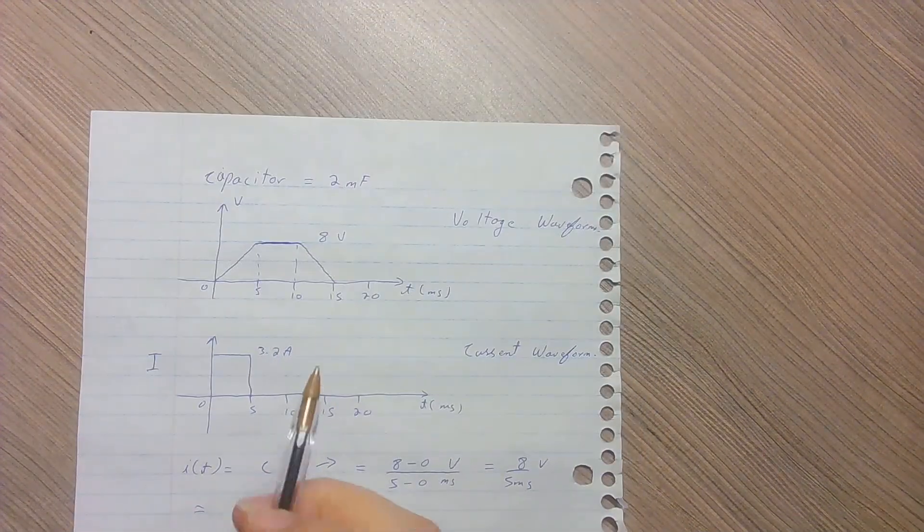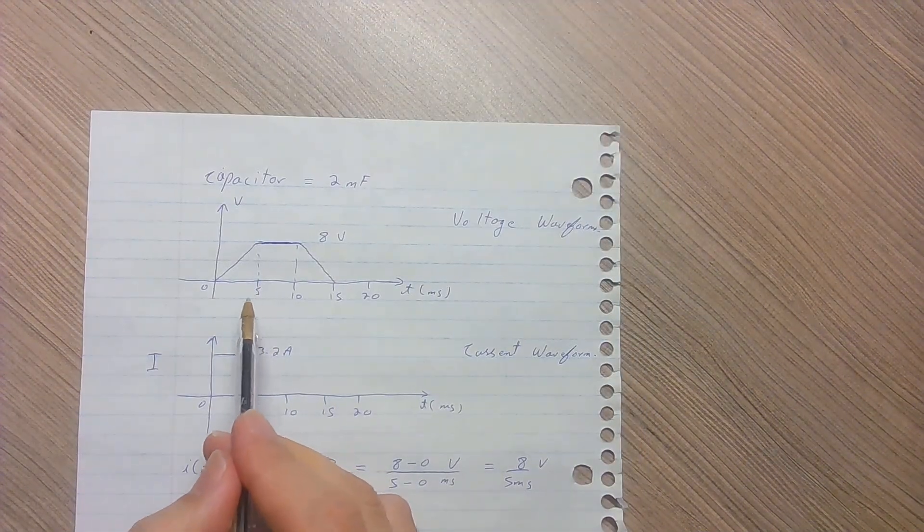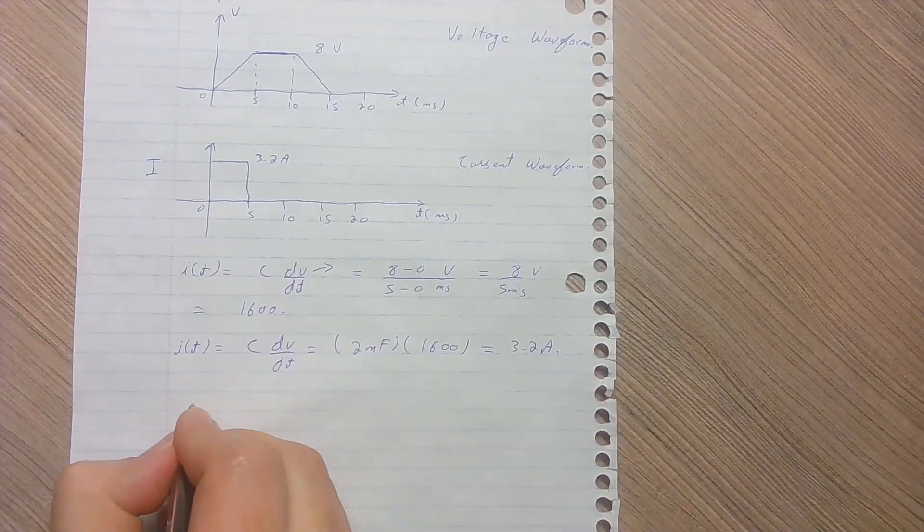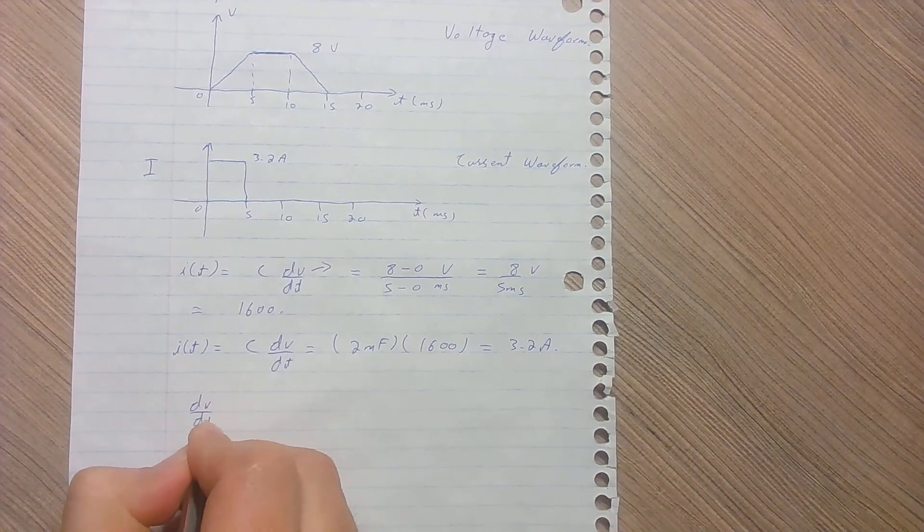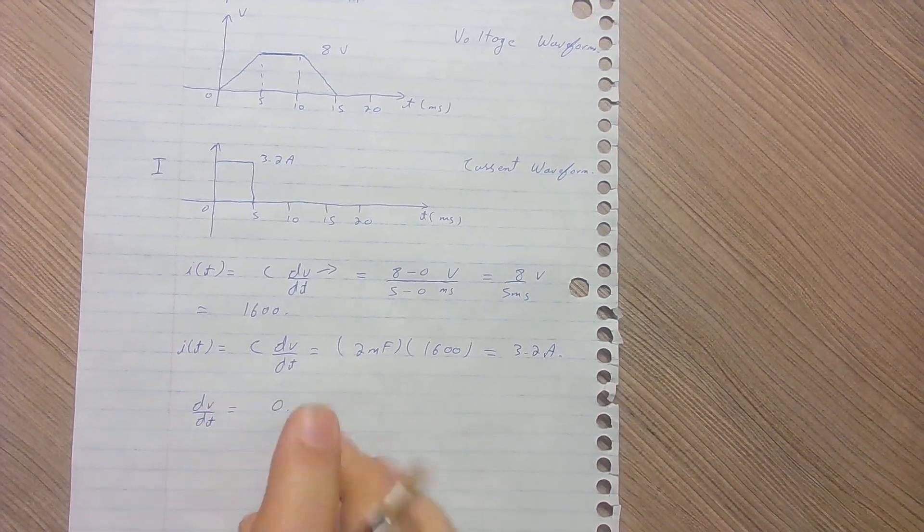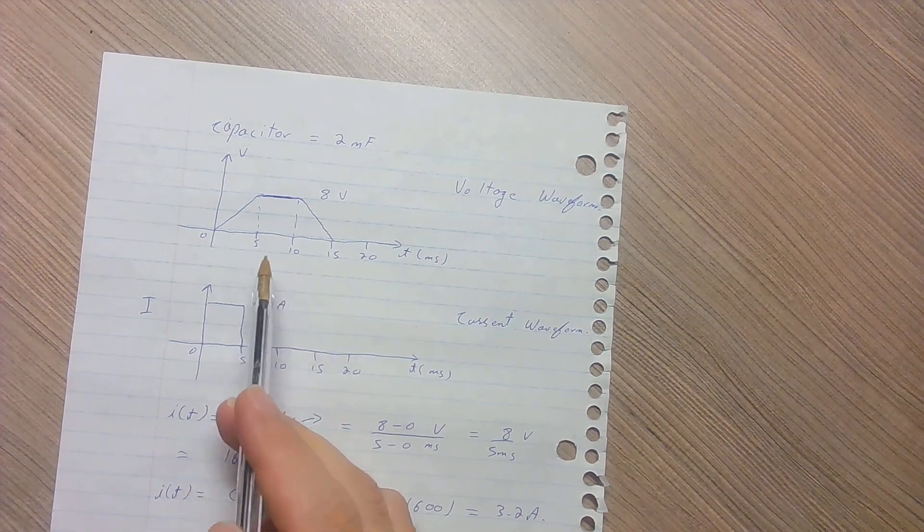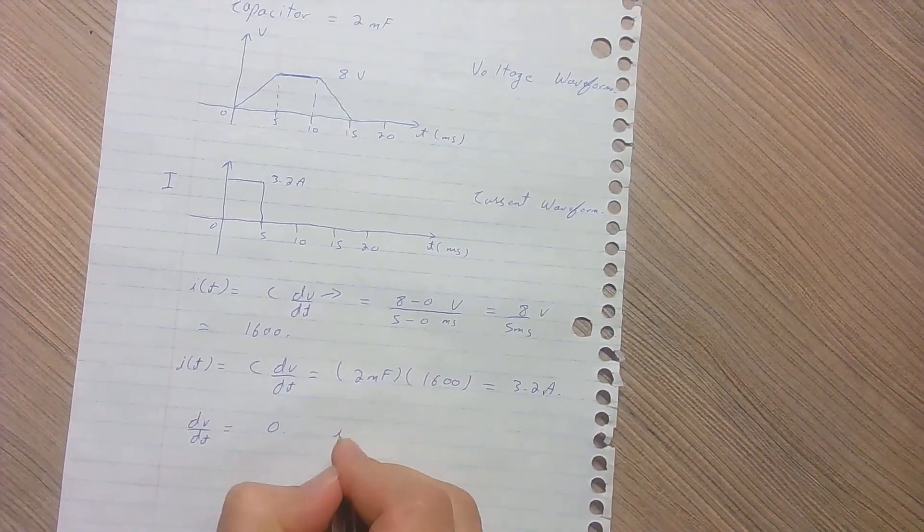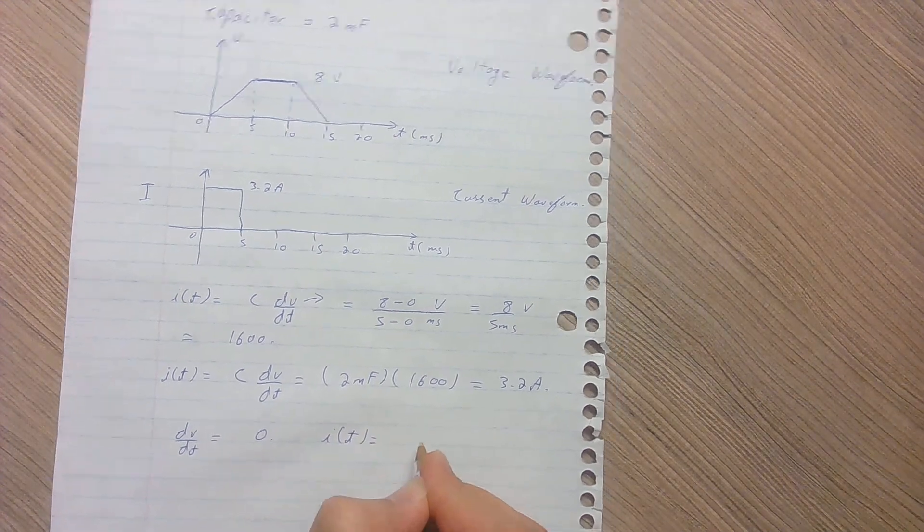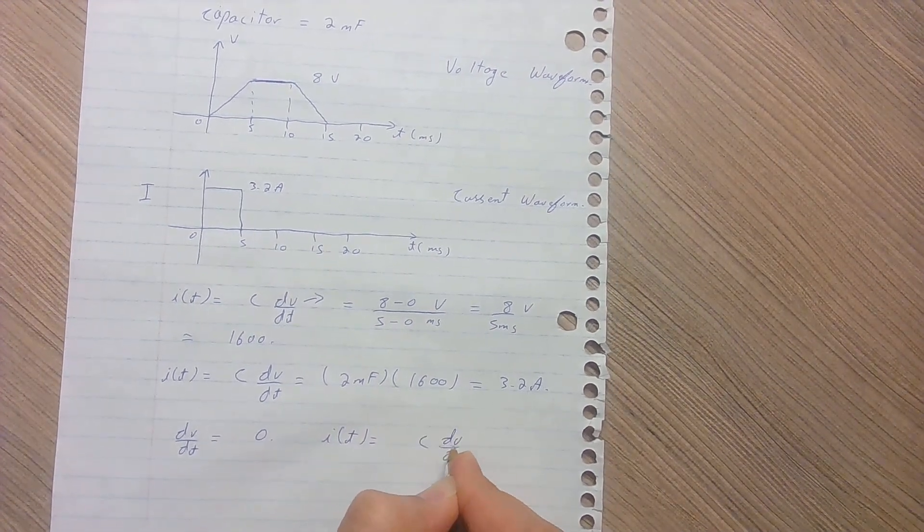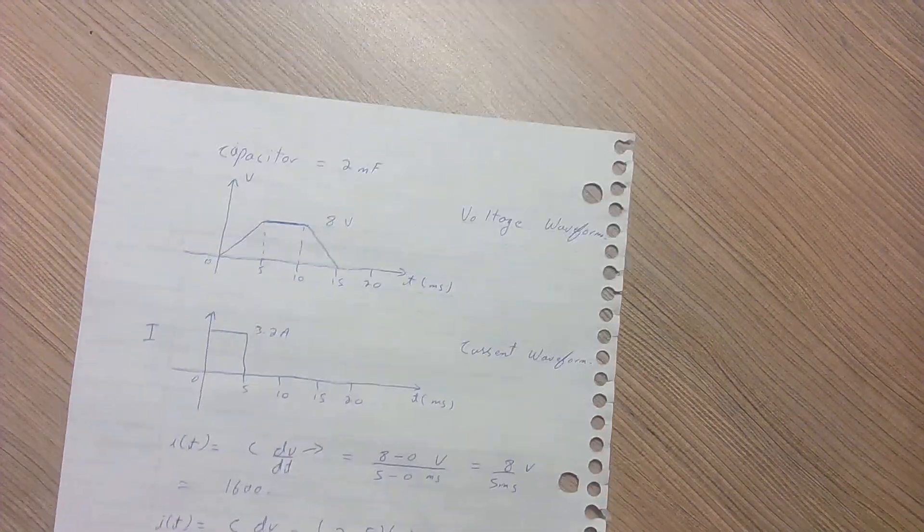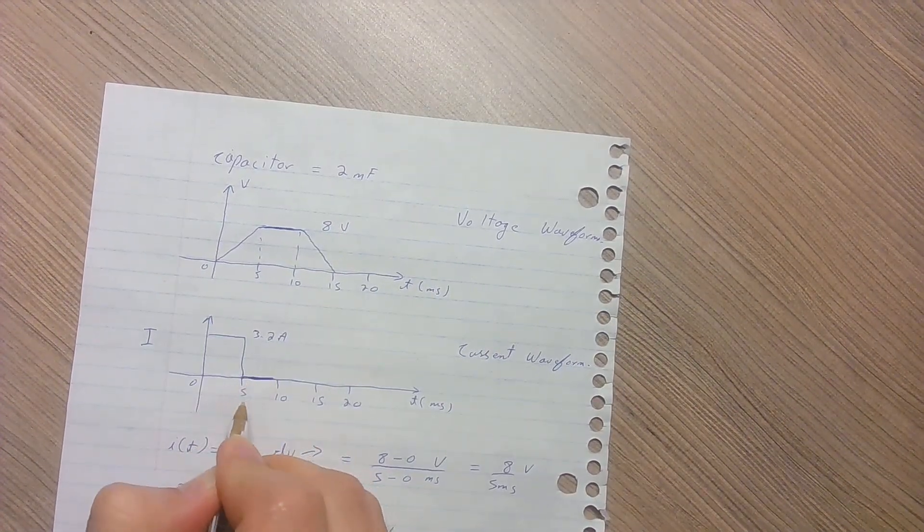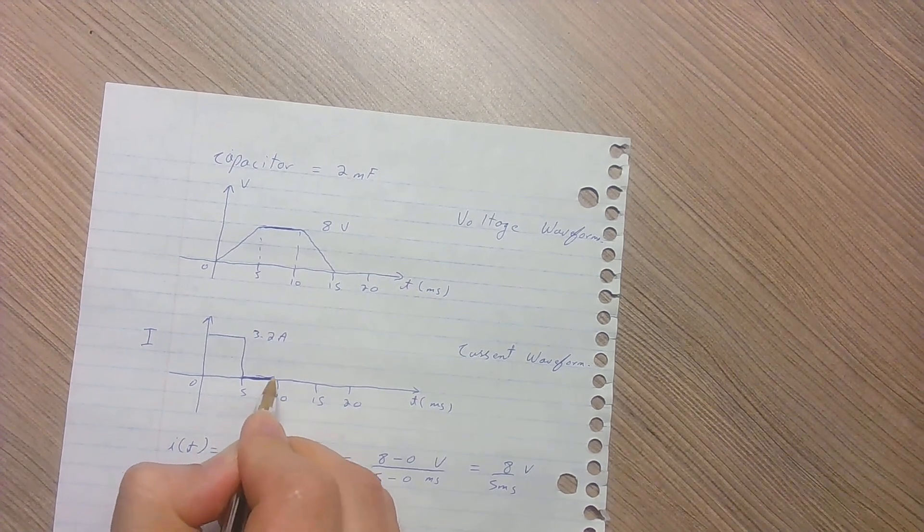Now, if we want to calculate the current from 5 milliseconds to 10 milliseconds, the change in voltage over time is 0. Because the voltage is constant over this time period, the current we get is 0. So from 5 milliseconds to 10 milliseconds, the current value is 0.